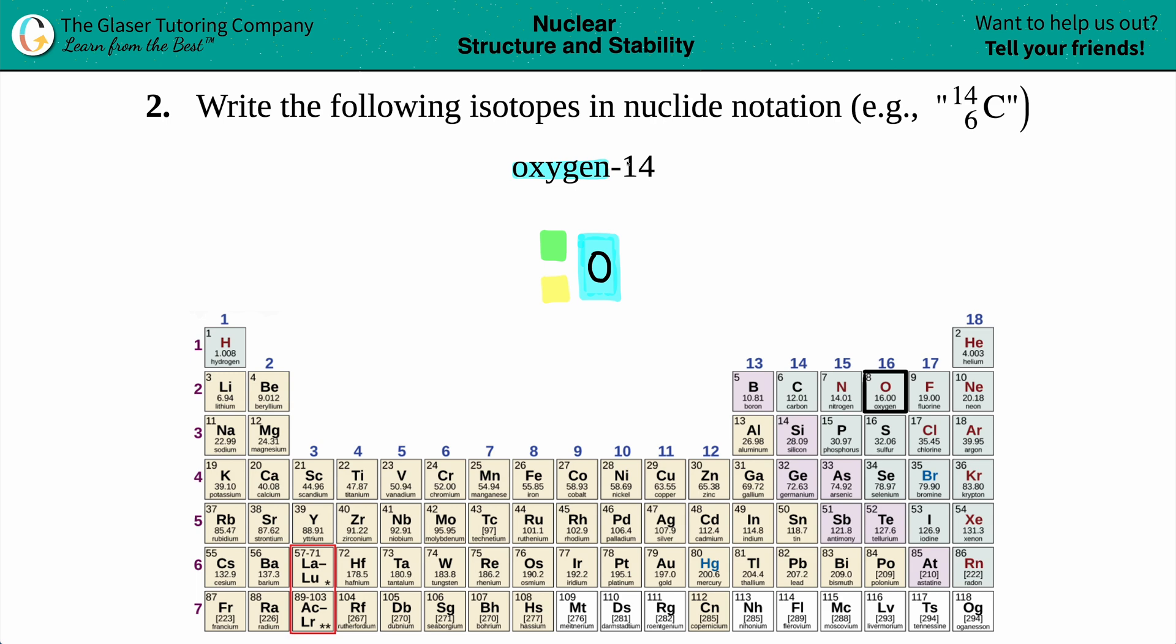Now we have the number 14. When they say oxygen-14 or carbon-12 or nitrogen-15, that number is always the atomic mass or the mass number. This is the bigger number of the two—there's an atomic mass and an atomic number. The atomic mass always goes on the top.